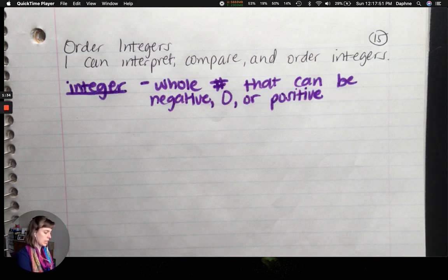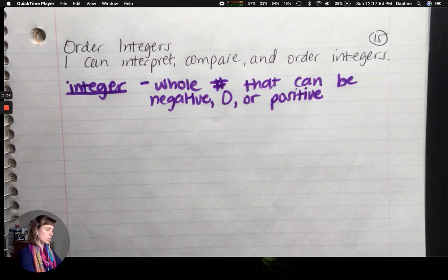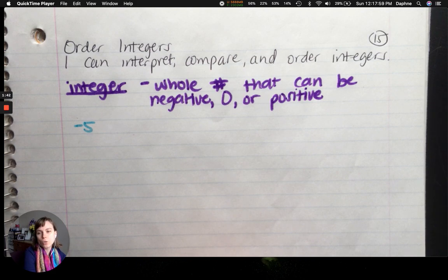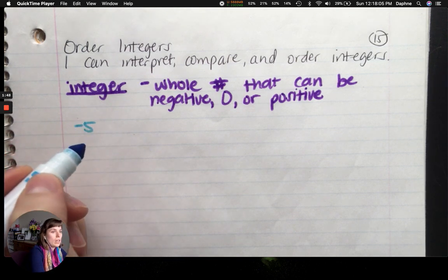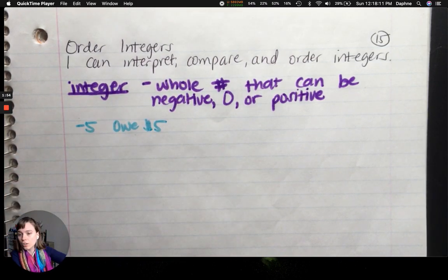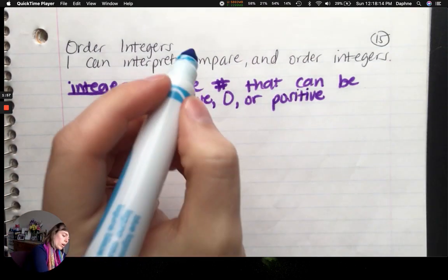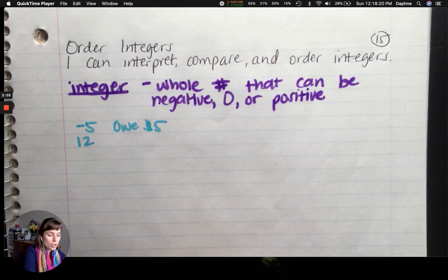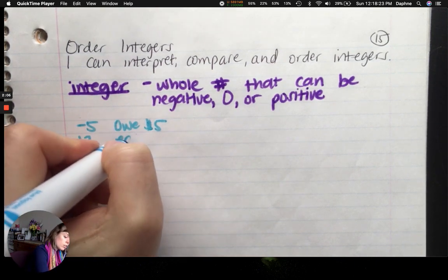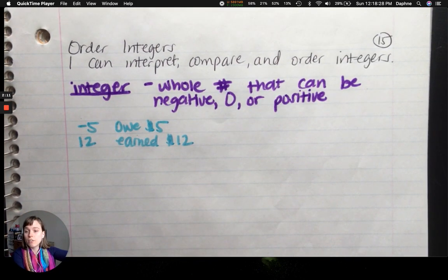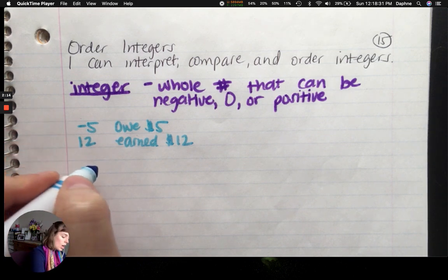So we're going to do some interpreting. Let's interpret negative five. What is a real world application? What could negative five represent? One thing it could be would be, I owe you. I owe five dollars to somebody. So I spent that five dollars or it's negative in my bank account. What could twelve represent? If you're on the same money track, it could be that you earned twelve dollars. Or you walked twelve feet, you're in the positive, you're going towards something.